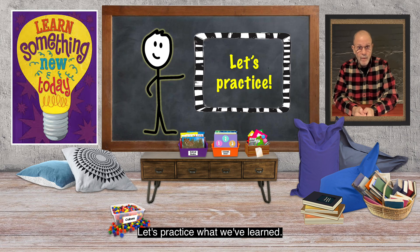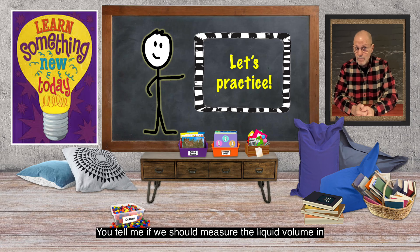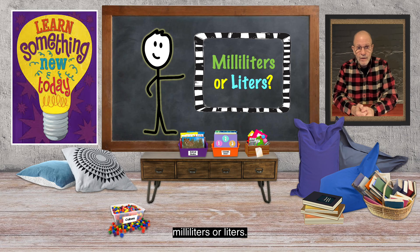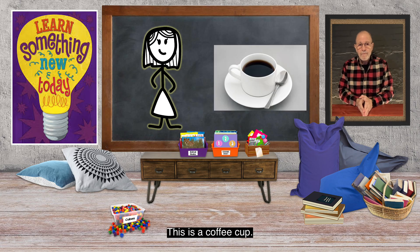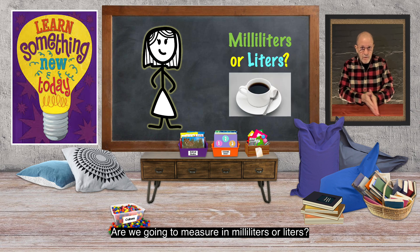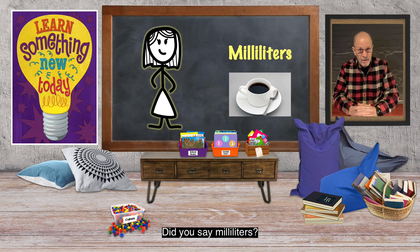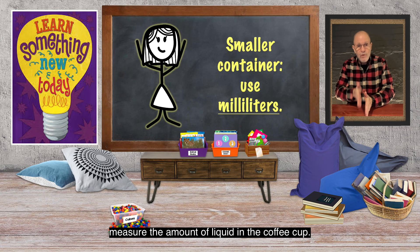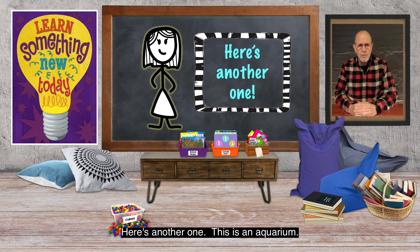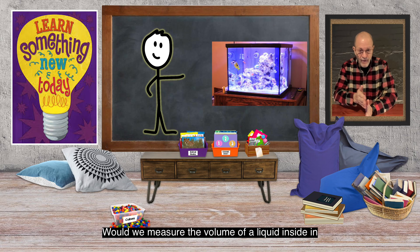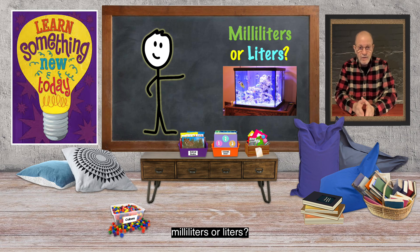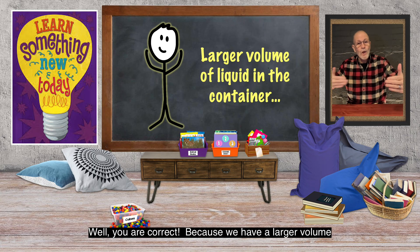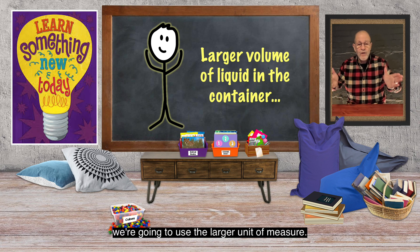Let's practice what we've learned. I'll show you two containers — you tell me if we should measure the liquid volume in milliliters or liters. Take a look: this is a coffee cup. Are we going to measure in milliliters or liters? Did you say milliliters? You are correct! Because we have a smaller container, we use the smaller unit of measure. Here's another one: this is an aquarium. Would we measure the volume of liquid inside in milliliters or liters? Did you say liters? You are correct! Because we have a larger volume of liquid, we use the larger unit of measure.